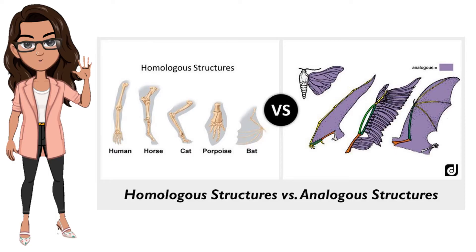However, analogous structure means unrelated animals have organs with similar functions, yet are very different in structure and form.